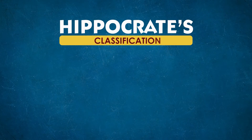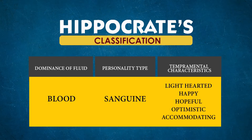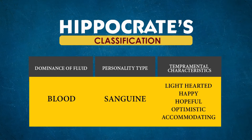First of all, there is a classification given by Hippocrates. This is based on the dominance of fluids in the body — that is, which particular kind of fluid is present. The first type is sanguine. These people have dominance of blood. The temperamental characteristics of sanguine people are that they are lighthearted, happy, hopeful, very optimistic and accommodating.